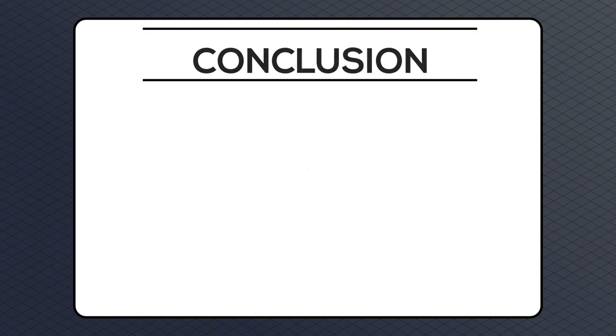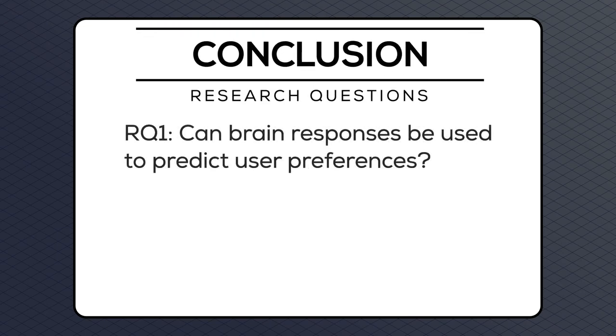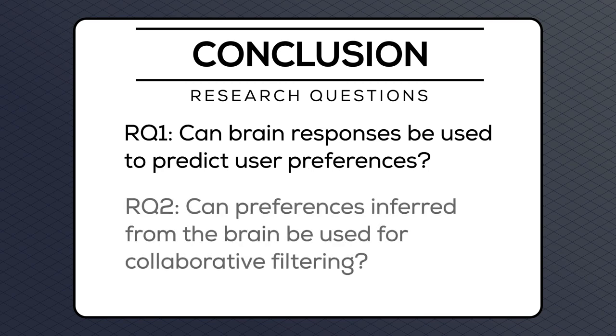The goal of this research was to answer the following questions: Can brain responses be used to predict user preferences, and can preferences inferred from the brain be used for collaborative filtering? Our results show that it is possible to reliably associate brain responses with self-reported preferences, and that graded preferences can be predicted from brain responses. Our results also show the feasibility of using brain input as an information source for collaborative filtering. All architectures for brain-based collaborative filtering achieved results significantly better than random and with large effect sizes.